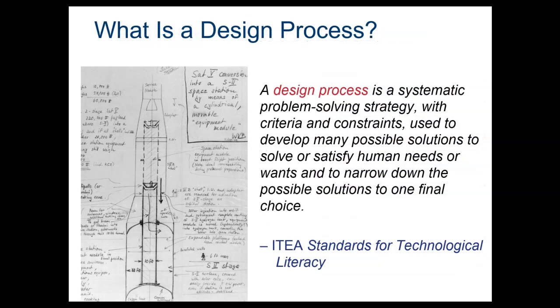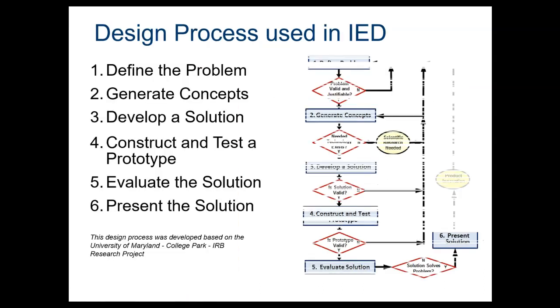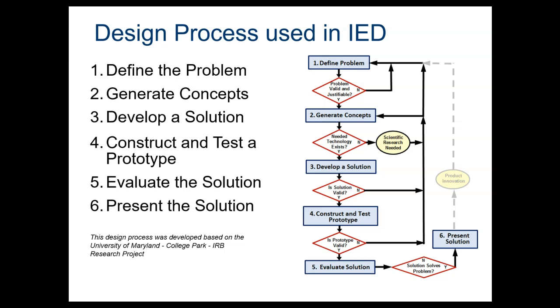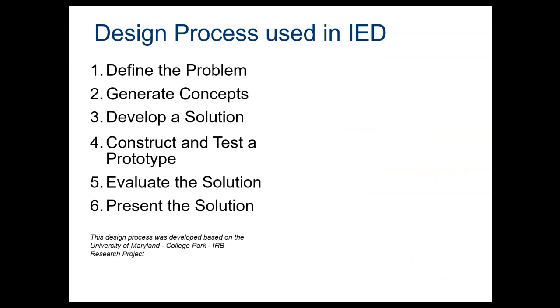We've been talking about design processes. We know what that is already. We know that it's a systematic problem-solving strategy. It's a step-by-step way we can develop as many possible solutions to solve a problem. And we know that the design process that we follow in our course is this one with the six steps. Now there are many design processes that are used by engineers. For our purposes, we use a simple six-step process.